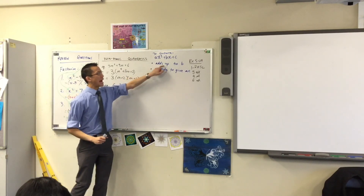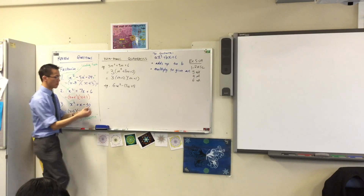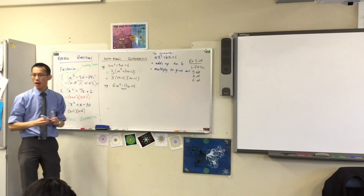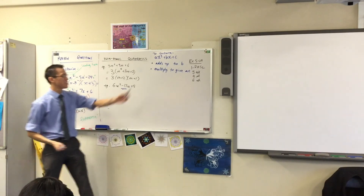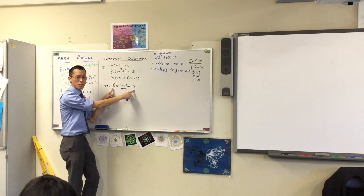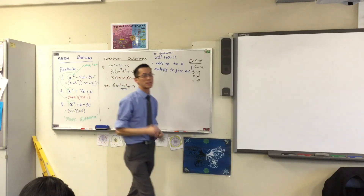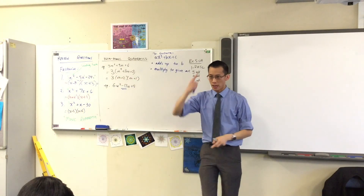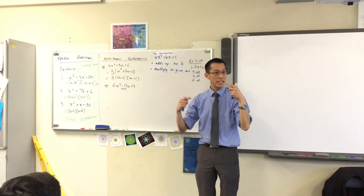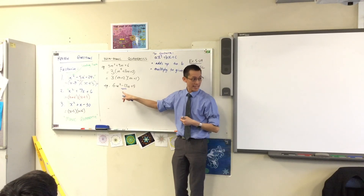So we want the pair of numbers to add up to negative 17. And we want the pair of numbers to multiply to give 6 times 5, which is 30. Think about your factors of 30. It's going to be negative 15 and negative 2.